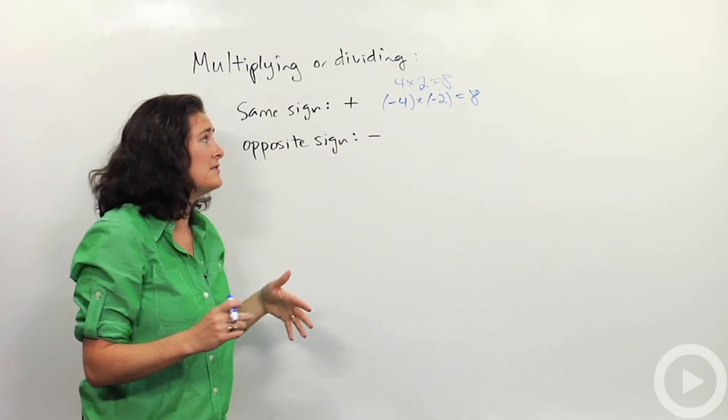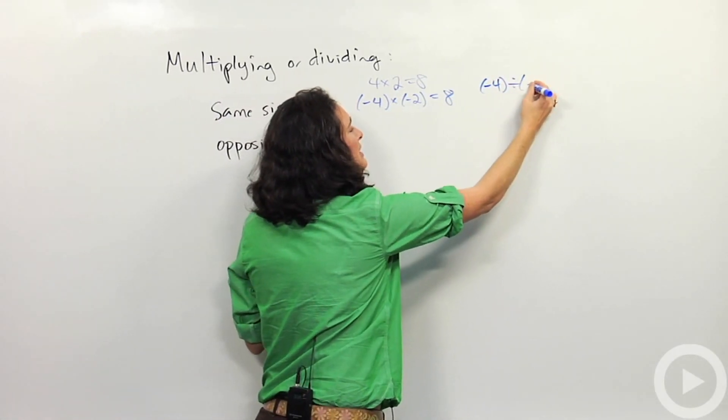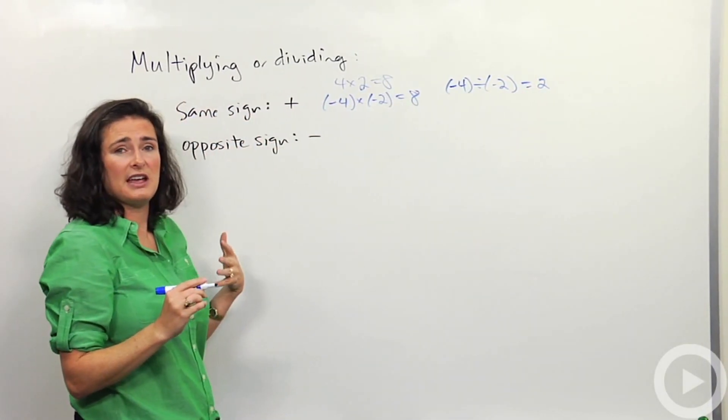I could do the same thing with division. If I do negative 4 divided by negative 2, again, I'm going to get a positive answer. Same sign, positive answer.